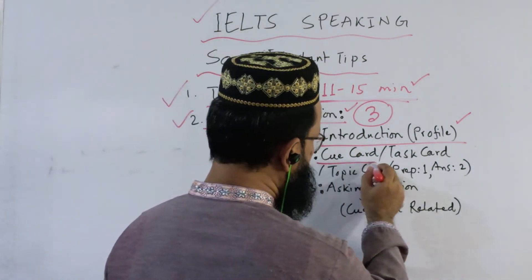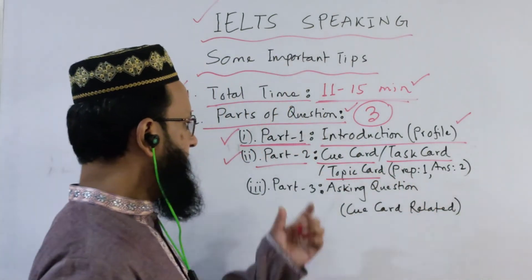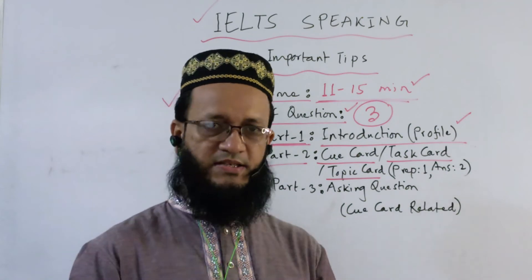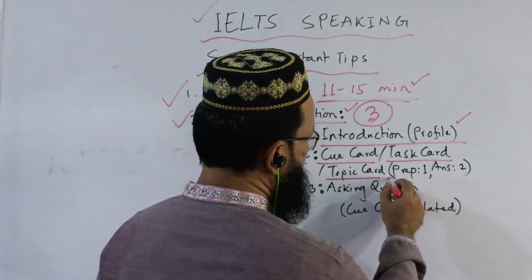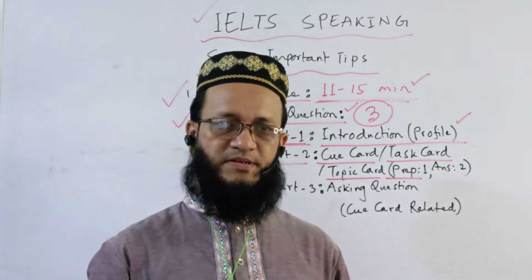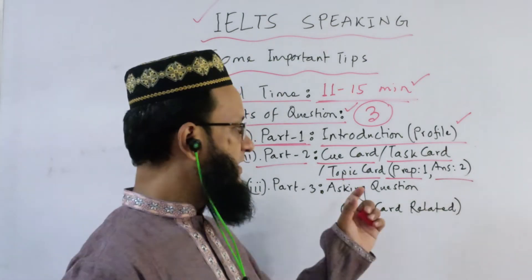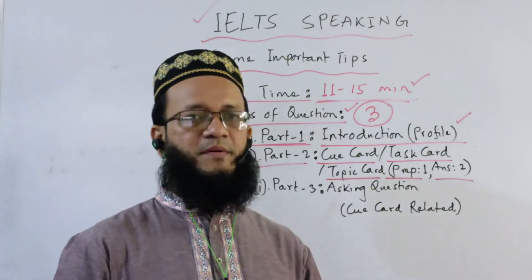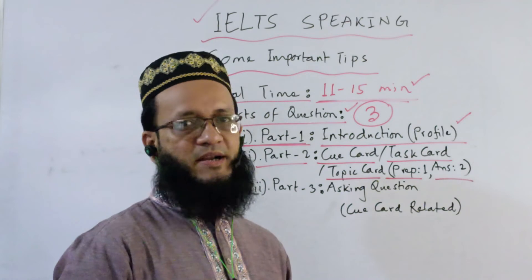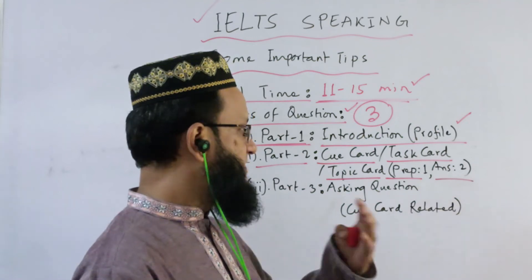In part two, the examiner will give you a cue card — also called a task card or topic card. The cue card is sent to the student during the exam. You have one minute to make notes using pencil and paper, and then two minutes to speak. Topics can include: favorite movie, favorite country, favorite person, favorite color, favorite book, favorite time, favorite season. These are easy, simple topics.